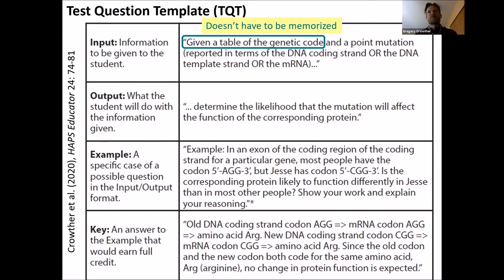In this example, students are explicitly told that they will be given a table of the genetic code, making it clear that they need to be able to use this table but do not need to memorize it.